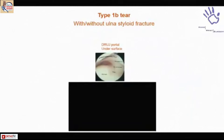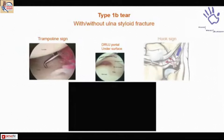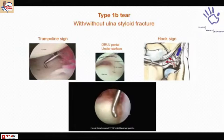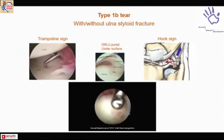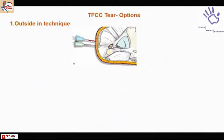In a type 1B tear, the undersurface foveal attachment is gone. Indirect signs include a positive trampoline sign — the tautness is lost. You can actually hook up the entire TFC complex with a hook probe and see it is totally unstable, as shown in the video. There are many ways of treating this acute DRUJ instability.